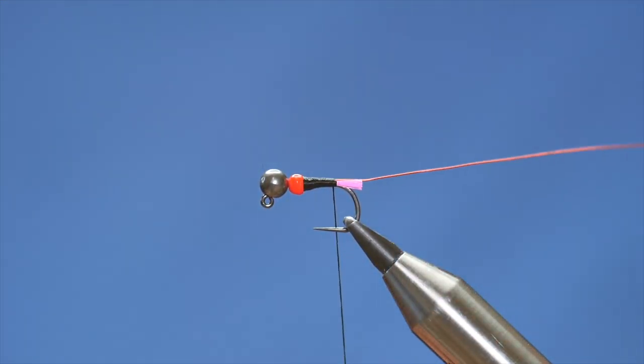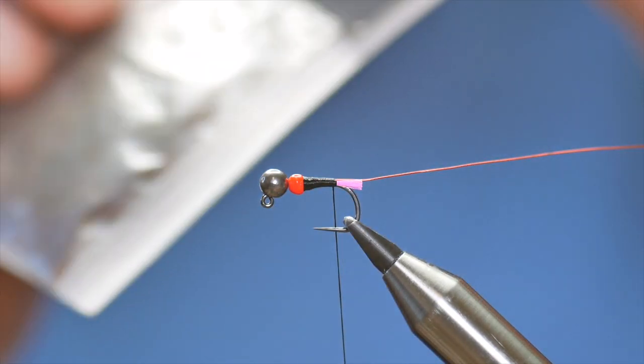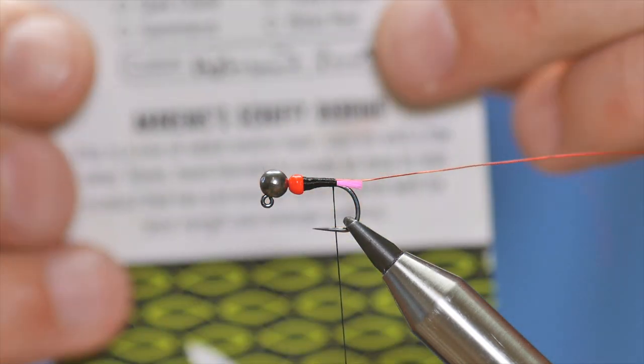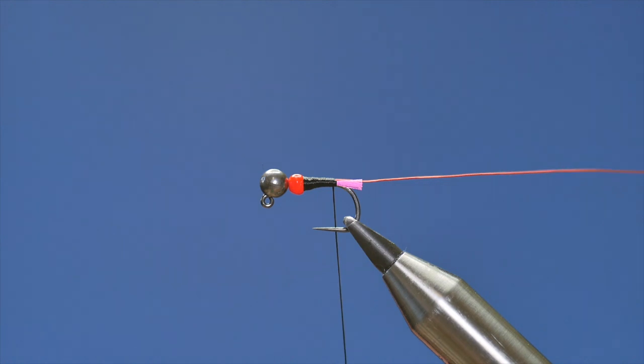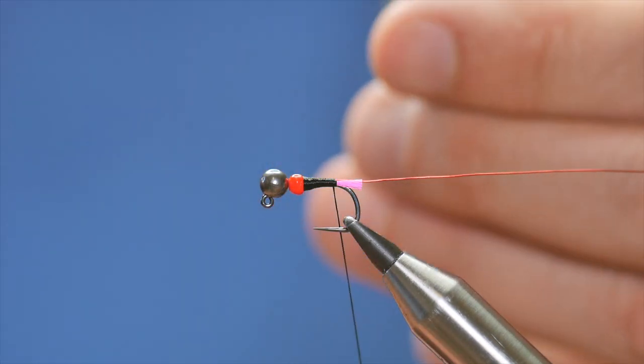There's lots of different variations of this fly that I can do at this point. I can use my UTC thread, which is quite nice for making bodies and just build a proper body. Or, in this case, I'm going to use some dubbing. The dubbing I'm going to use for this part of the body is the Trout Stalkers and this one is the Highland Peat. I've taken a pinch of that.